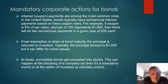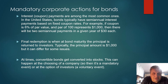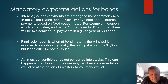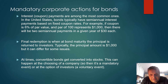Final redemption is another mandatory corporate action. At a bond's maturity, the principal is returned to investors. Typically the principal amount is $1,000, but it can differ for some issues. At times, convertible bonds get converted into stocks. This can happen at the choosing of a company — making it a mandatory event — or at the option of investors, making it a voluntary event.